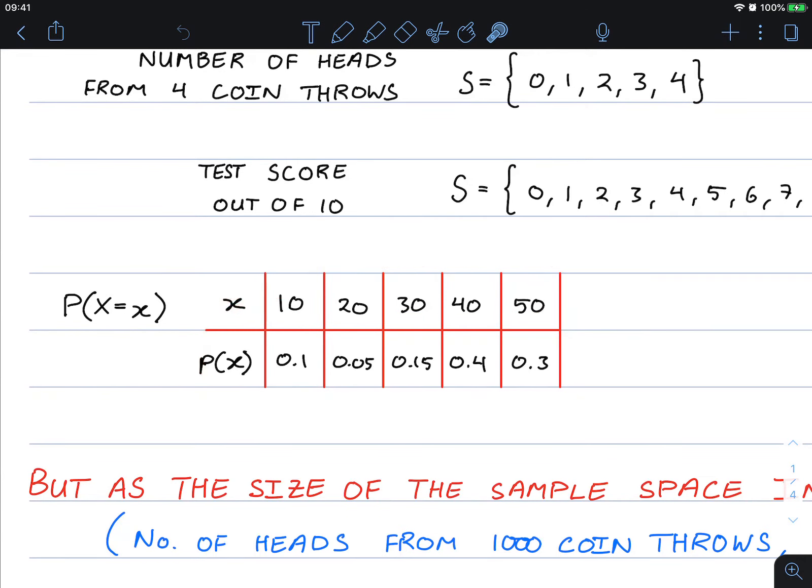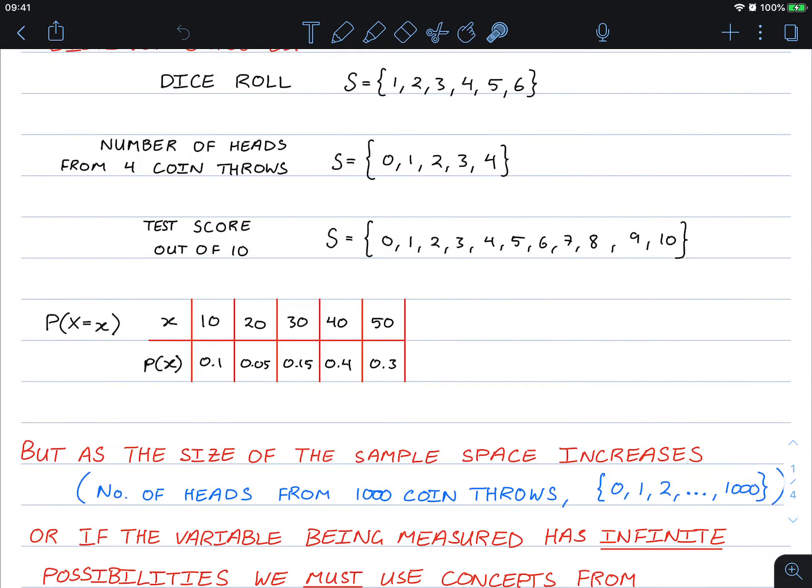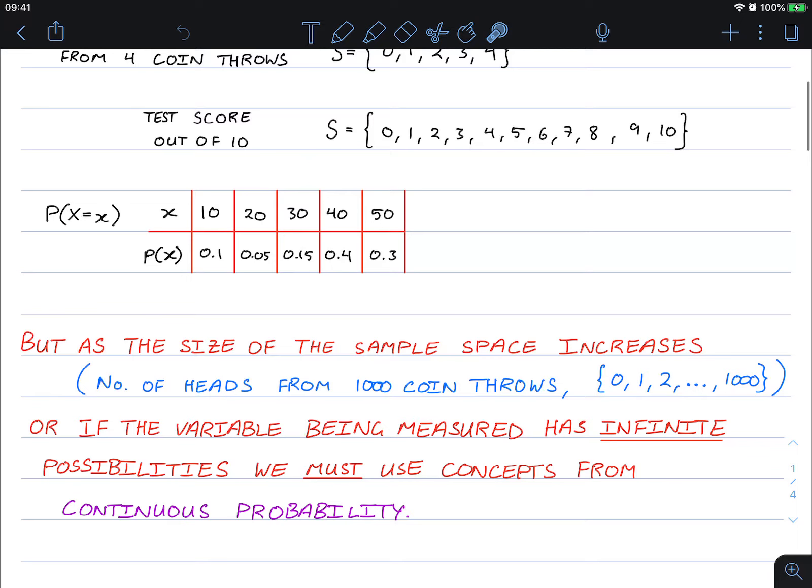But as the size of the sample space increases, like for example if we throw a coin 1,000 times, how many heads could we get? We could get zero heads, one head, two heads, three heads, all the way up to 1,000 heads from the thousand coin throws. Or also if the variable being measured has infinite possibilities, we must use the concepts from continuous probability.